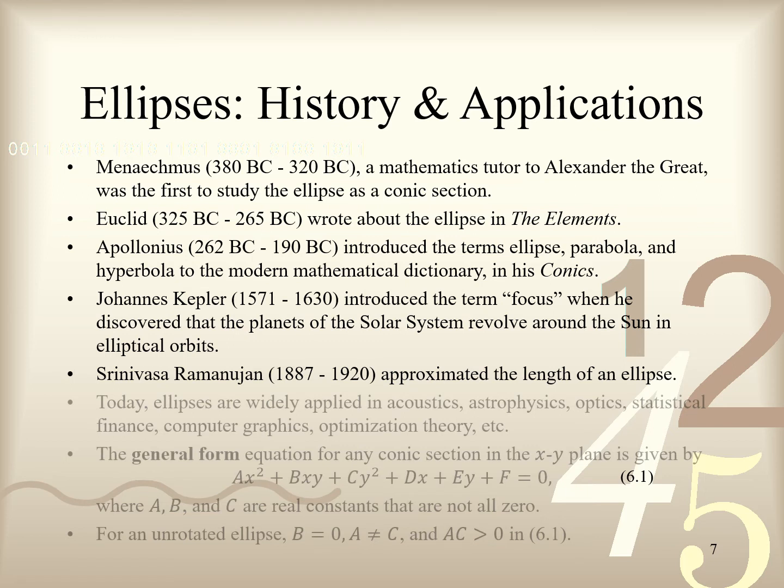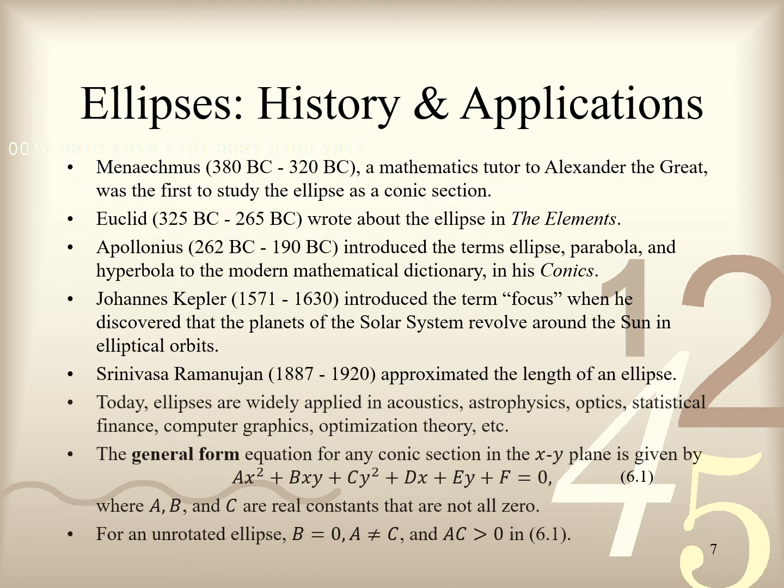Moreover, the general form equation for any conic section in the XY plane is given by Ax² + Bxy + Cy² + Dx + Ey + F = 0, where A, B, C, D, E, and F are real constants, with A, B, and C not all 0, which we label as 6.1. In particular, for an unrotated ellipse in the XY plane, which is either horizontally or vertically oriented, B equals 0, A does not equal C, and the product AC is strictly positive in 6.1.